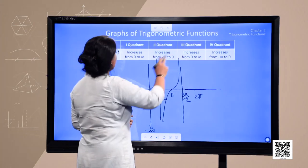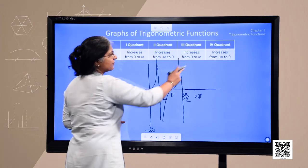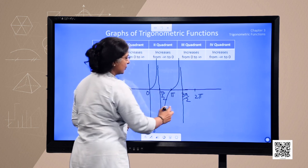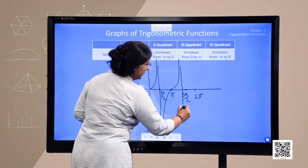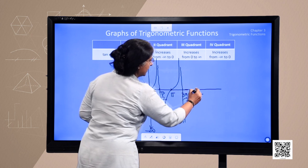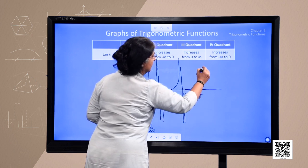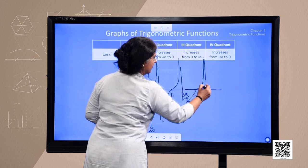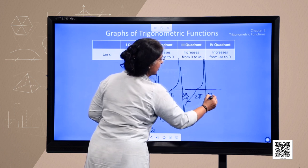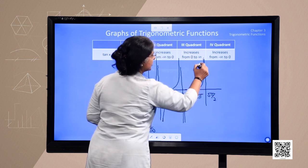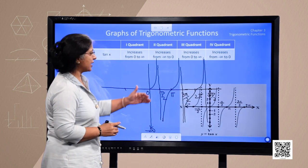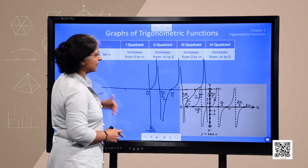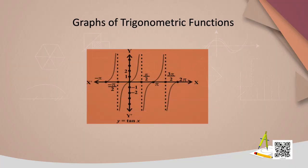In the fourth quadrant, the value of tangent will increase from minus infinity to 0, and at 5 pi by 2 it is again not defined, so it will not touch that line. In a similar fashion, we can extend this graph in the negative direction. This is the graph of the tangent function.